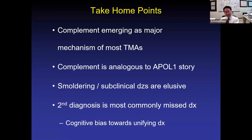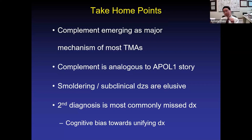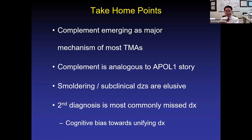Atypical HUS actually often is the second diagnosis. As we probably recognize, the most commonly missed diagnosis in medicine is the second one. When I say the second diagnosis, I don't mean the less important one — I mean that a patient may already be labeled with lupus or scleroderma, and you're focused on that disease, and you're not necessarily looking for another mechanism that could actually be more important than the original label. Thinking about this entity has been fascinating because it's allowed me to understand that we have a cognitive bias towards Occam's razor — towards having a unifying diagnosis.